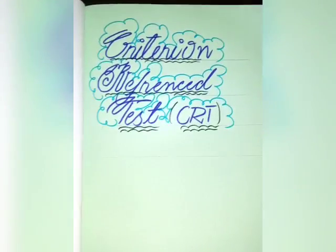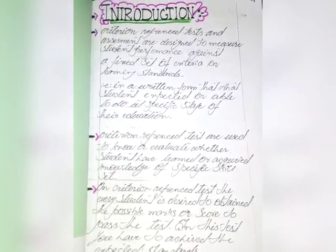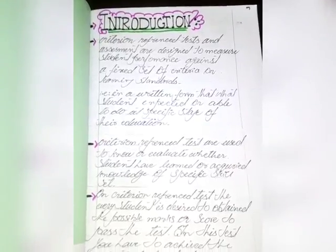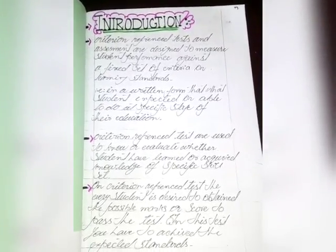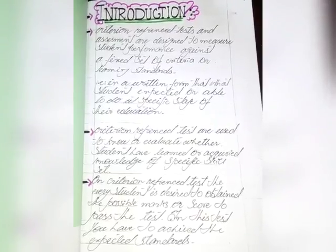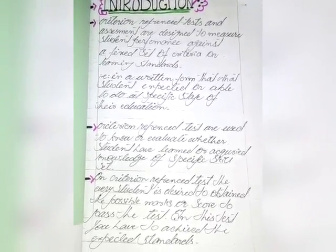The second topic is Criterion Reference Test, CRT. Criterion reference tests and assessments are designed to measure student performance against a fixed set of criteria or learning standards. For example, a routine form specifies what students are expected to be able to do at a specific stage. Criterion reference tests are used to know whether students have learned or acquired knowledge of specific skills.